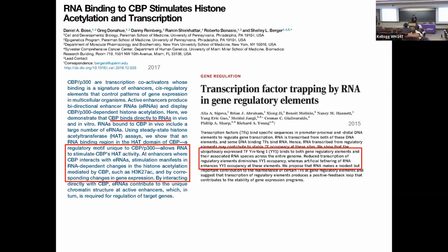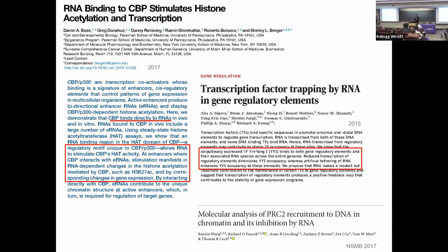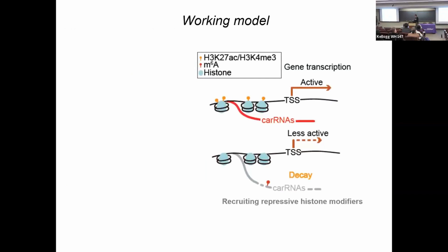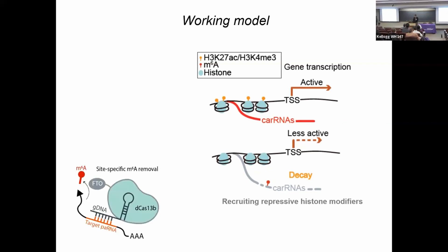These RNAs are likely important in condensate formation or assembly of transcriptionally active complexes. We believe the way to regulate this is through modification: for retrotransposon RNAs that help regulate nearby transcription, you can methylate and decay that RNA. Other labs have since shown that the presence of methylation is also critical to recruit histone modifiers to install H3K9me3, leading to repressive chromatin. But at this point everything was correlational — we needed to establish causality.